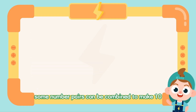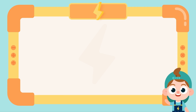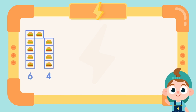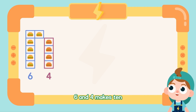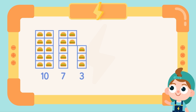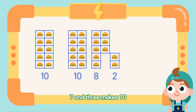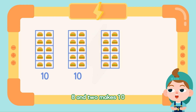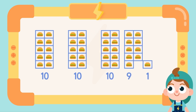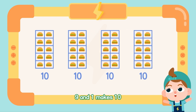Some number pairs can be combined to make 10. Let's check them out. 6 and 4 makes 10. 7 and 3 makes 10. 8 and 2 makes 10. 9 and 1 makes 10.